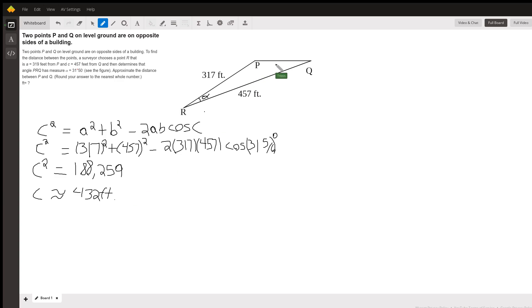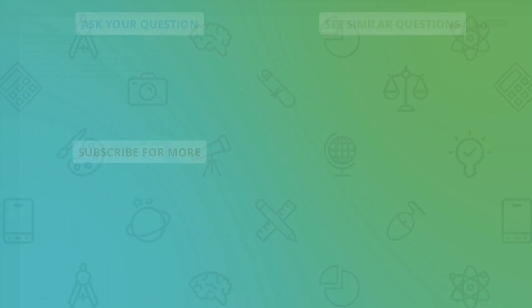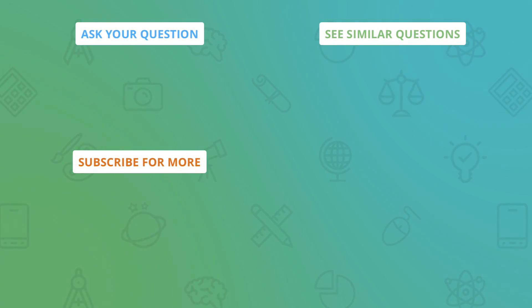Or our distance between these two things. So we now know that this side is approximately, that's what this little tilde means. That's better. It's approximately 432 feet. All right.